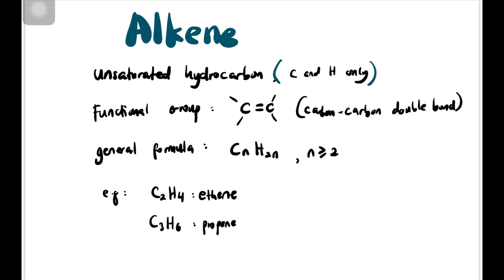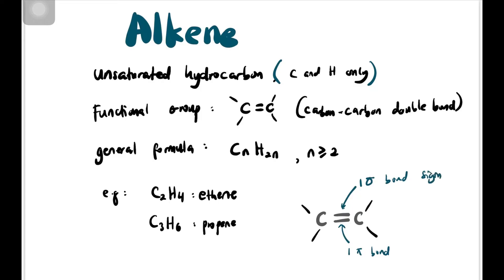Kalau C3H6, propene. E-N-E. And by the way, just intro — dekat carbon-carbon double bond tu, yang double bond tu sebenarnya, satu bond dipanggil sebagai sigma bond, satu lagi bond dipanggil sebagai pi bond. Just for information. Settle with 3.1.